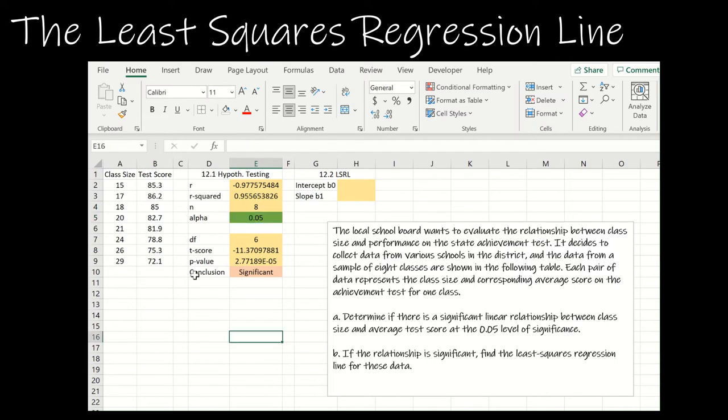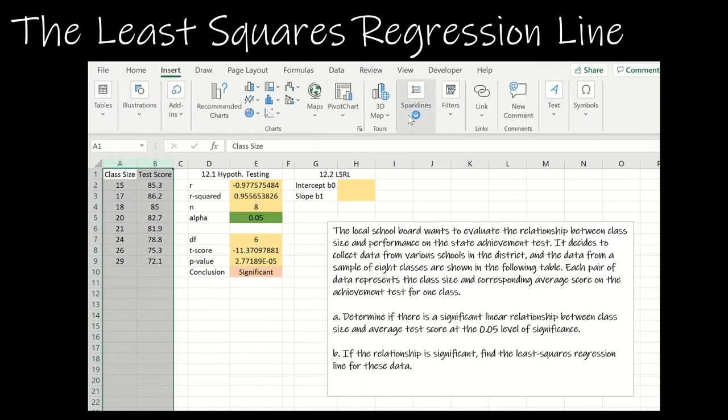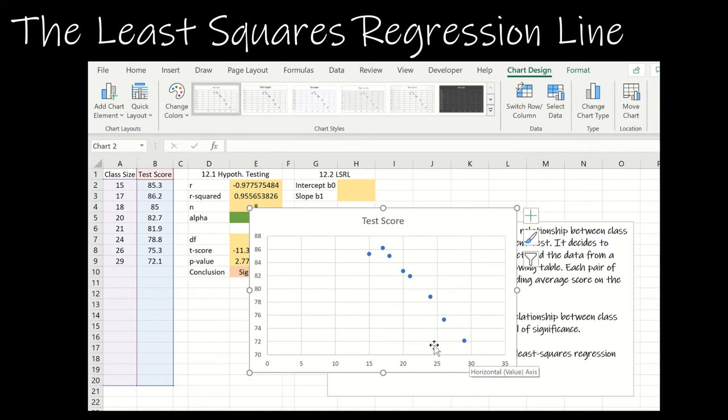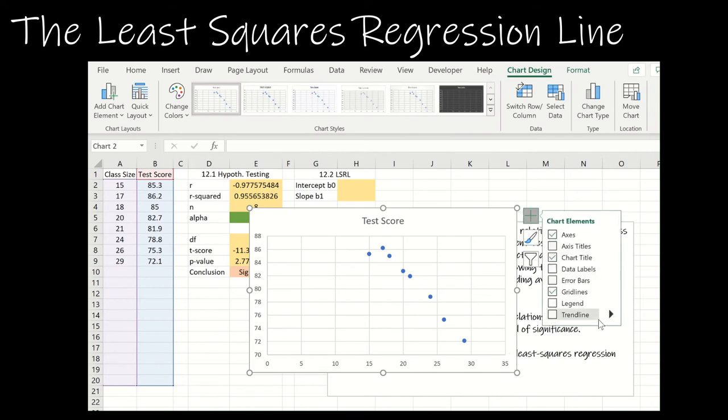So again one way that I can do this is go to insert and scatter plot, and notice I have my scatter plot and it's obviously got a negative slope which I can see at the R value as well. I don't need to make it all fancy, I don't care if I have data labels and all of that, but what I do want to add is my trend line and I want more options. So I want it to be linear and I also can say display equation and R squared value on the chart.